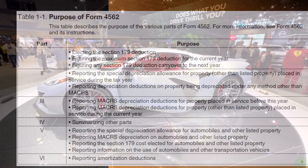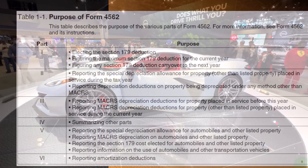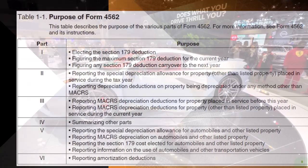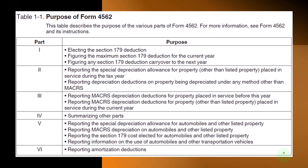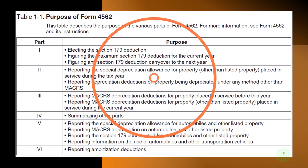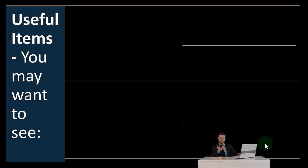Reporting Section 179 cost elected for automobiles and other listed property. Reporting information on the use of automobiles and other transportation vehicles. And then part number six: reporting amortization deductions.